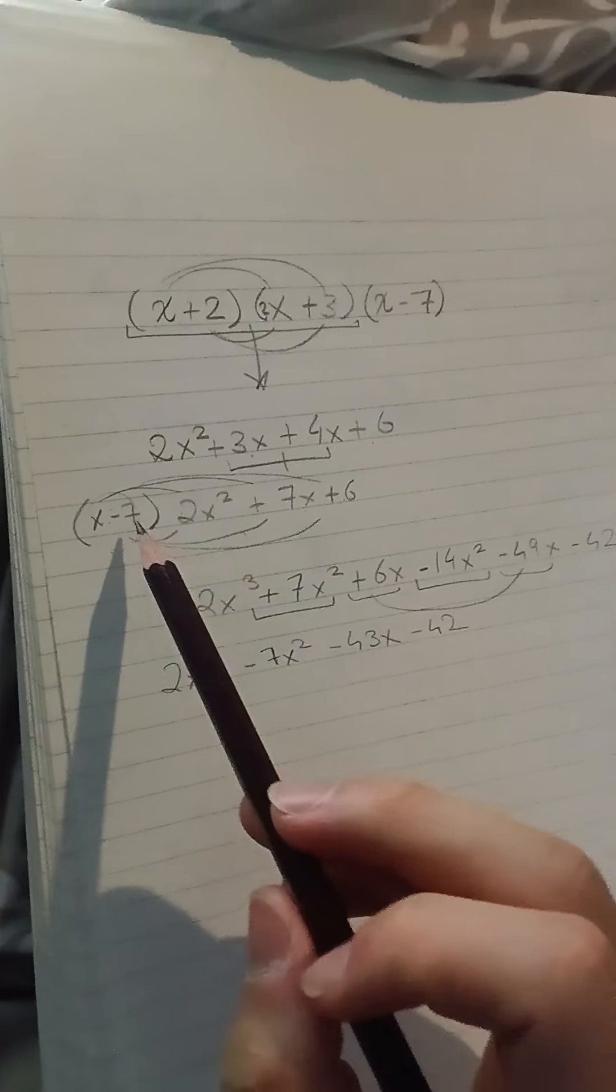Using FOIL, multiply this bracket all throughout these three terms. So x times 2x squared is 2x cubed, x times 7x is 7x squared, x times 6 is 6x,